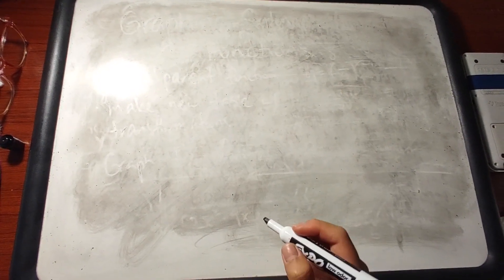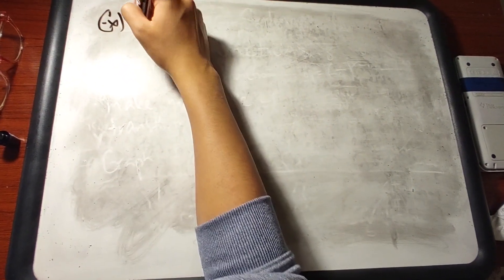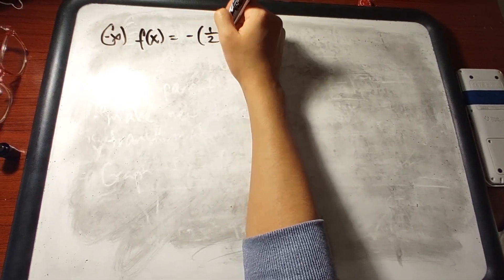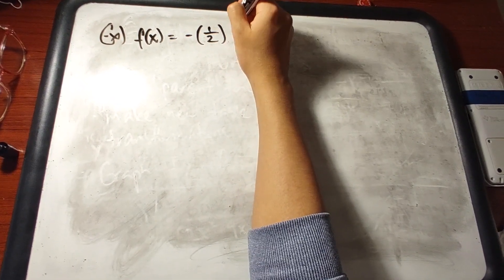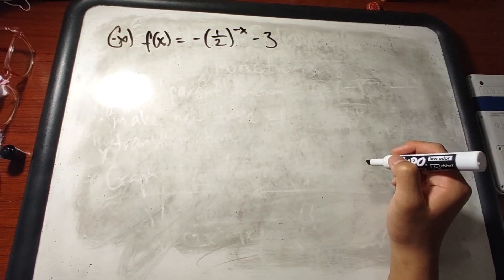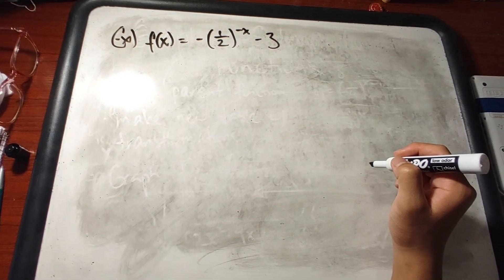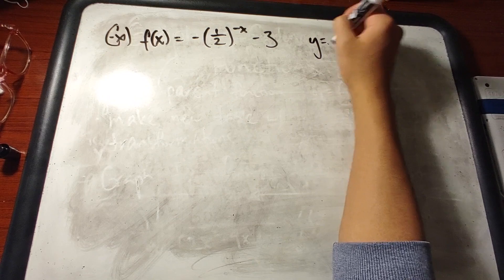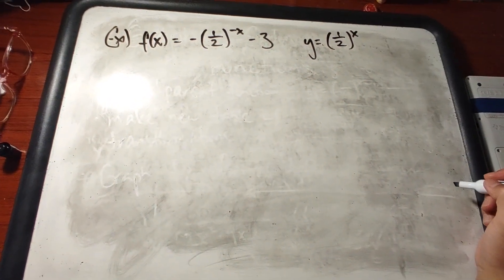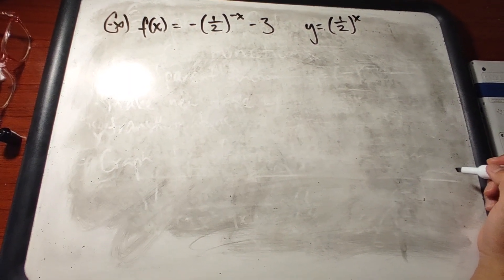We're going to go over an example that graphs an exponential function. f(x) equals negative (1/2) to the power of negative x minus 3. So the first step is to make a table for the parent function. In this case, the parent function will be (1/2)^x because it is the function that removes all the reflections, all the translations, and all that stuff.